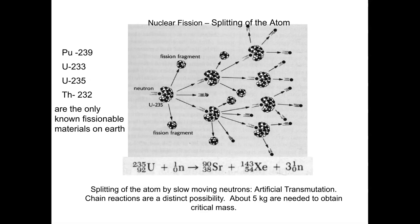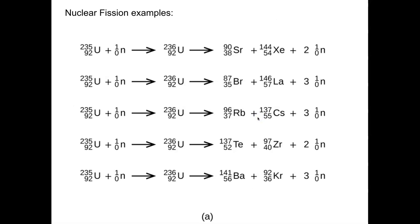The energy we get from fission is a thousand times more than a chemical process, so we don't need as much fuel. Here are examples using uranium-235 — notice we produce more neutrons at the end and have smaller, more stable fragments, although not completely stable.